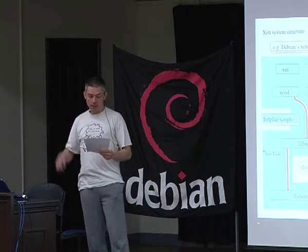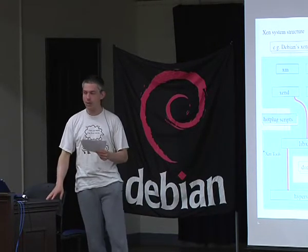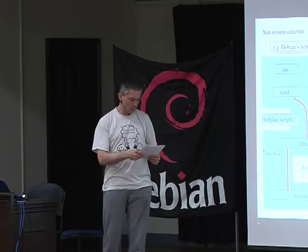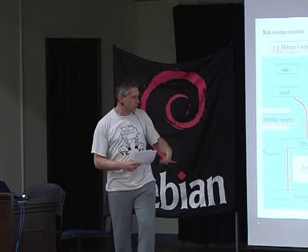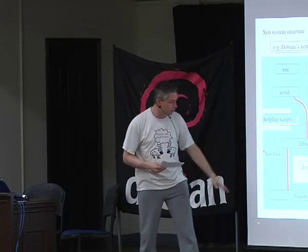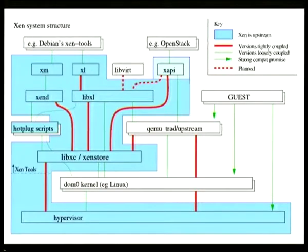Nowadays, since around Linux 3.0, all or almost all of this necessary code is in the Linux upstream tree. The interface between the Dom0 kernel and the hypervisor is much broader than that provided to guest kernels. And also, the interface between the tool stack and the Dom0 kernel is relatively broad.